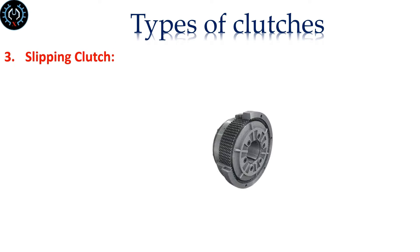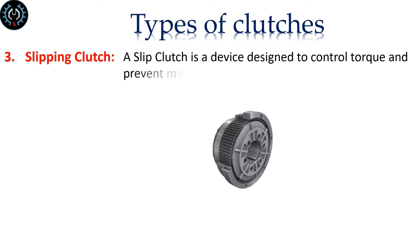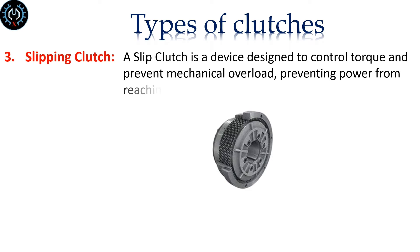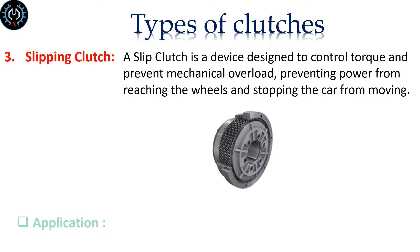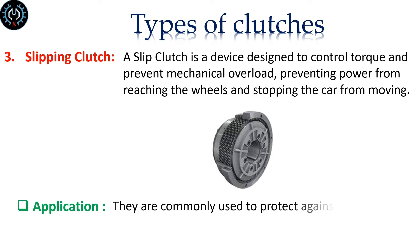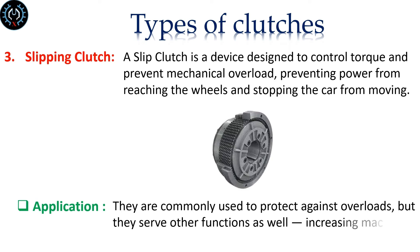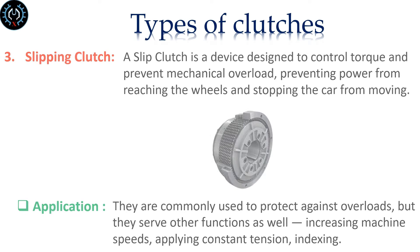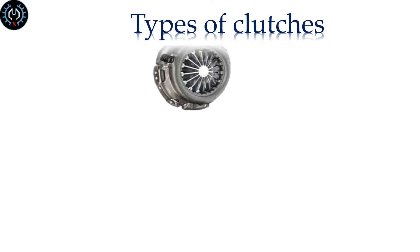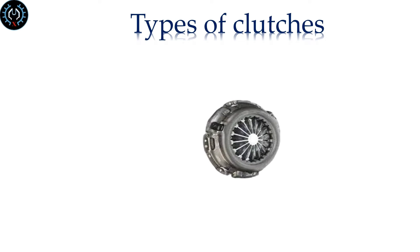Slipping clutch. A slip clutch is a device designed to control torque and prevent mechanical overload, preventing power from reaching the wheels and stopping the car from moving. They are commonly used to protect against overloads, but they serve other functions as well: increasing machine speeds, applying constant tension, and indexing.